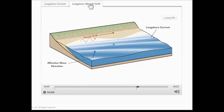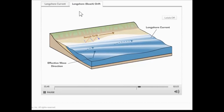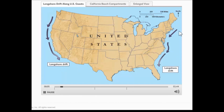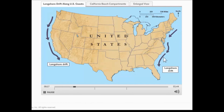If you were to look at the movement of sand by longshore drift along both coasts of the United States, what you'd find is that the net movement of sand is to the south, both along the west coast and the east coast. The reason is that most of our big waves come from the North Pacific on the west coast, or from the North Atlantic on the east coast. Those waves come from the north, hit the beach from north to south, and push the sand from north to south.